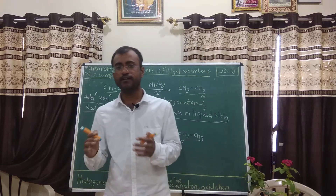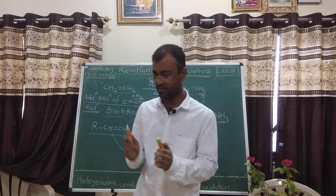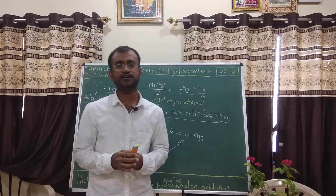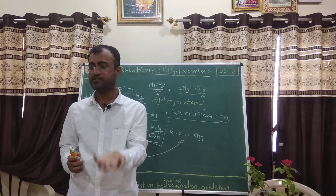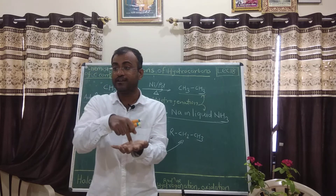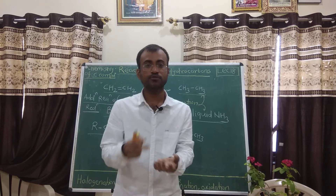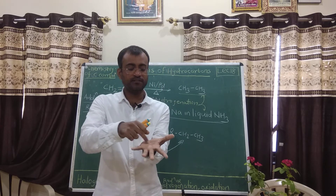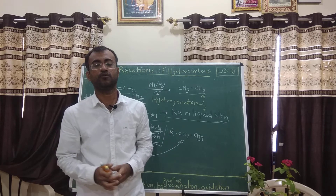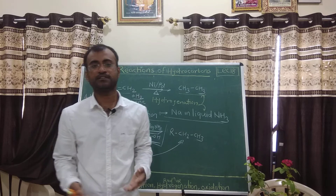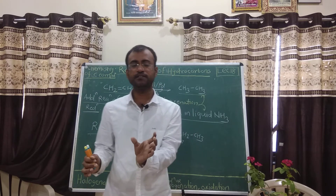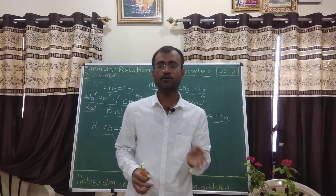Next we will see bromination of unsaturated compounds. I want to tell you an interesting thing about bromine. Bromine is a reddish liquid — it is such a dangerous substance. If it falls on your skin it can burn through skin and bone. So for the bromination test, the distinguishing test reaction, we use bromine solution. This bromine reaction is also used as a distinguishing test for hydrocarbons.